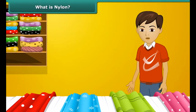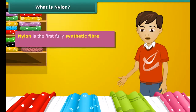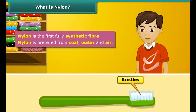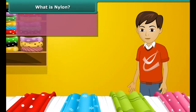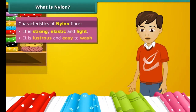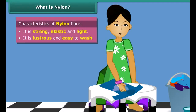The first fully synthetic fiber is nylon. The very first nylon product was a toothbrush with bristles. Nylon is popular for making clothes because nylon fiber is strong, elastic, light, lustrous and easy to wash.